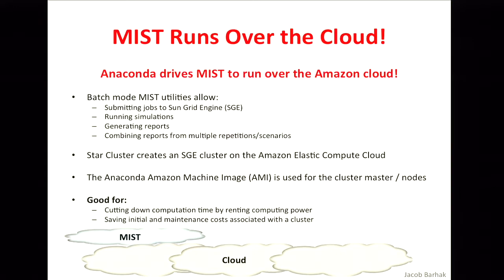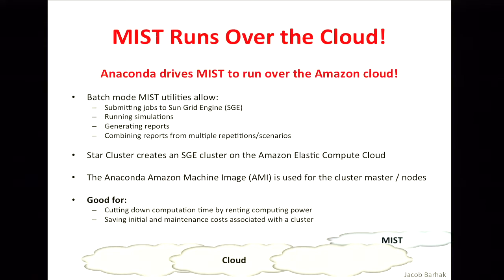This cluster will run SunGrid Engine. Basically, if you have any software that runs on SunGrid Engine, you can use Star Cluster to run it over the cloud. You can define your own computers and which kind of image you want to use. I use an Anaconda AMI to run it. Anaconda not only offers a distribution, you can also find an Amazon Machine Image that you can run. And MIST does run over the cloud. If you download MIST from GitHub, you'll be able to find some sample code that shows you how to do this.